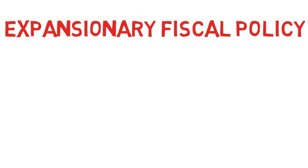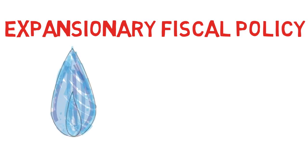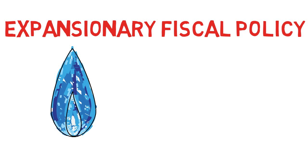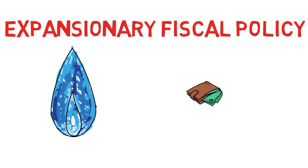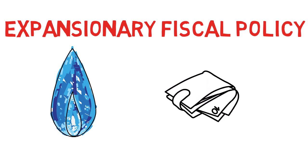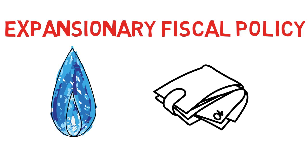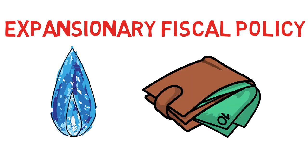Fiscal policy can be expansionary, in which case the government is heating up the economy — it is increasing government spending and reducing taxation. Expansionary fiscal policy can be a combination of both, or it can be one or the other: a reduction in tax or increases in spending.